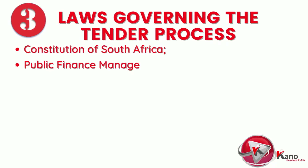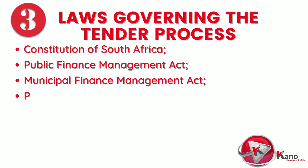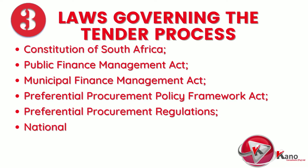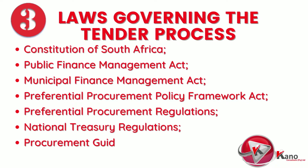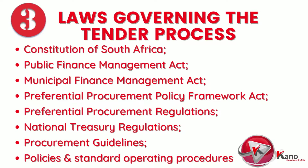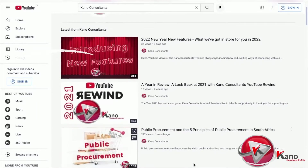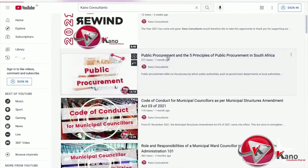Some of the relevant laws, policies, regulations, and guidelines include: the Constitution of South Africa, the Public Finance Management Act, the Municipal Finance Management Act, the Preferential Procurement Policy Framework Act, preferential procurement regulations, various National Treasury regulations, procurement guidelines issued by the National Treasury and Department of Finance, as well as policies and standard operating procedures developed within specific government departments, provincial departments, municipalities, and state-owned companies.